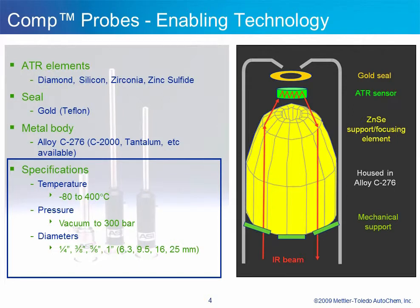In addition to the gold seal, a Teflon seal is also available. Many different types of probe housing materials can be used as alternatives to alloy C276, including tantalum, titanium, or other alloys. The temperature and pressure specifications for the COMP probes are dependent on the specific probe type, but the full temperature range is minus 80 to 400 degrees C, and the pressure range is vacuum to 300 bar. The COMP probe design is available in four diameters: 6.3 mm, 9.5 mm, 16 mm, and 25 mm, all coming in various lengths.